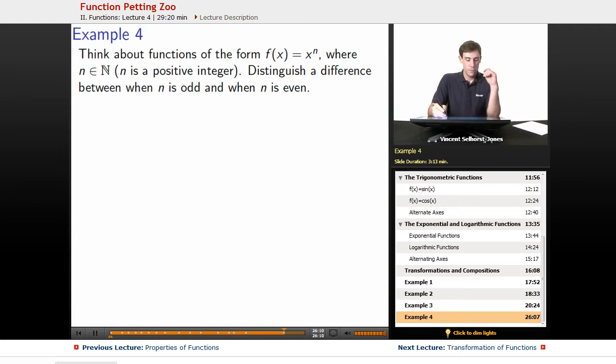Example 4. Think about functions of the form f(x) = x^n, where n is a positive integer. It's contained in the natural numbers. We distinguish the difference between when n is odd and when n is even.